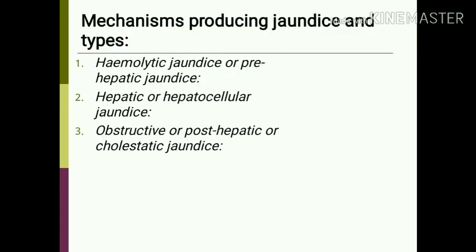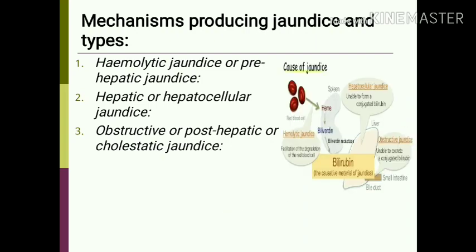There are three mechanisms producing jaundice and accordingly three varieties. One is hemolytic jaundice, also known as pre-hepatic jaundice, where there is excessive breakdown or hemolysis of RBCs. The second variety is hepatic or hepatocellular jaundice, due to damage to liver cells either due to infection or toxins — the liver cannot conjugate bilirubin efficiently. The third is obstructive or post-hepatic or cholestatic jaundice, where obstruction to the bile duct is the pathology.